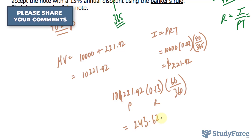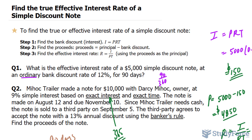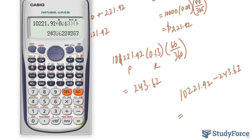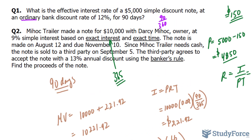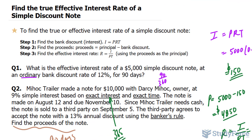The proceeds are then calculated by taking the principal — the new principal, which is the maturity value — minus 243.62. After the calculations, we get 9,978.29. This number represents the proceeds. And that's how to find the true effective interest rate of a simple discount note.